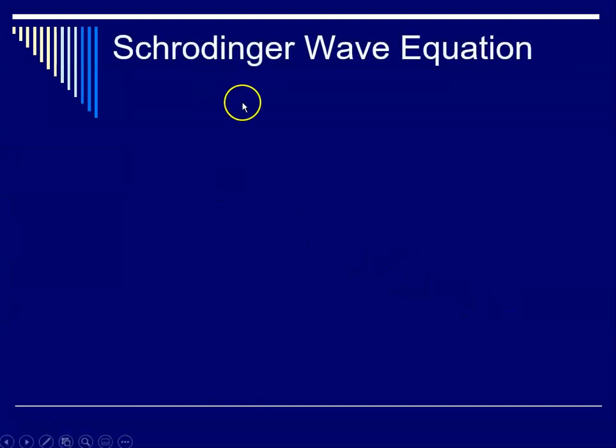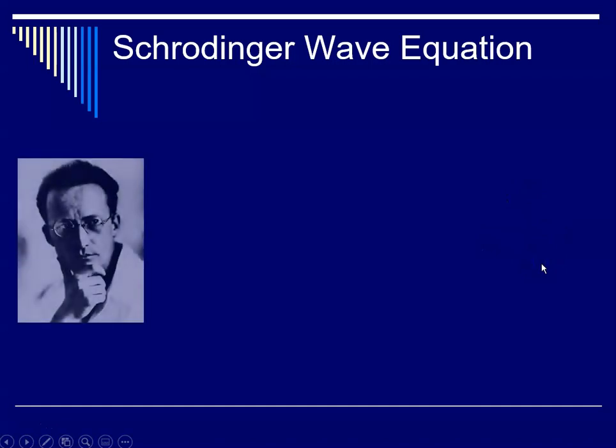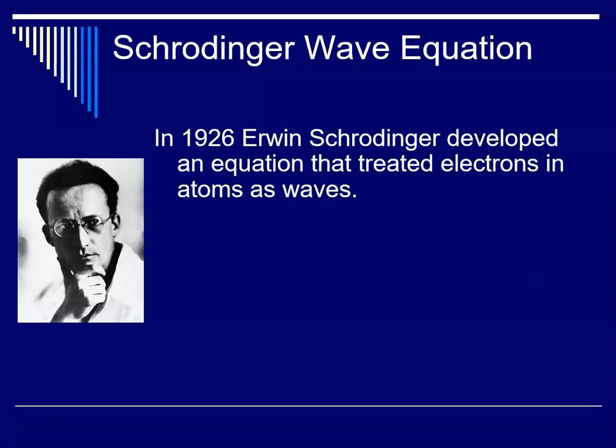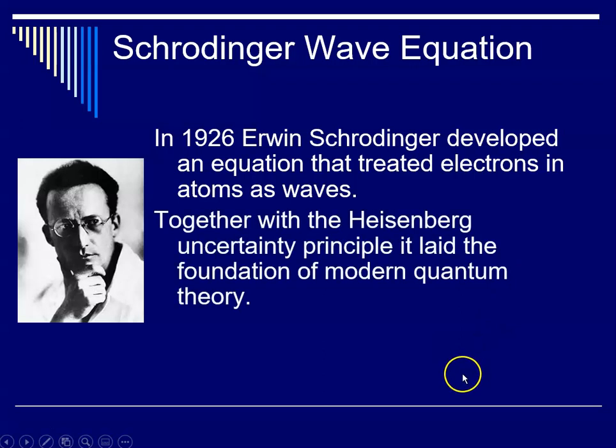That leads us to another Nobel laureate physicist, Schrödinger, who proposed a wave equation. His Nobel Prize was with another physicist Dirac in the 1930s. In 1926 Schrödinger developed an equation that treated electrons in atoms as waves. Remember de Broglie was the first to mention they could be treated as waves bound to a nucleus. Together with the Heisenberg uncertainty principle, it laid the foundation of modern quantum theory. Schrödinger was writing mathematical equations that explained the movement of electrons.